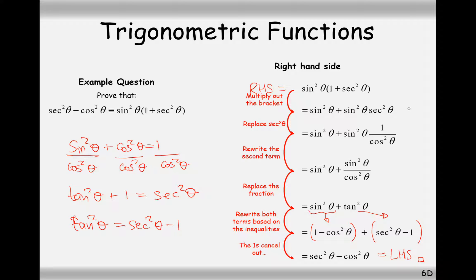Expanding the brackets came first, then in moving from the second to third line we simplified the whole question into just sines and cosines, which made the question a lot easier.